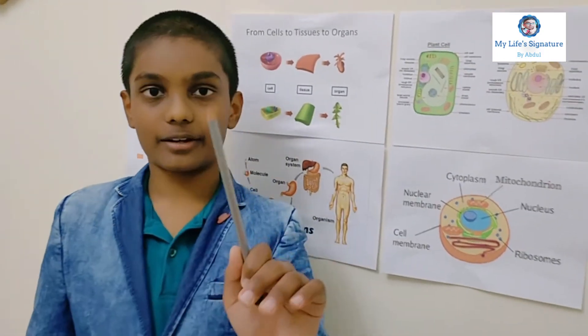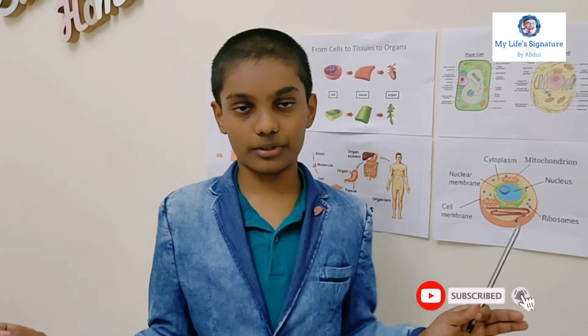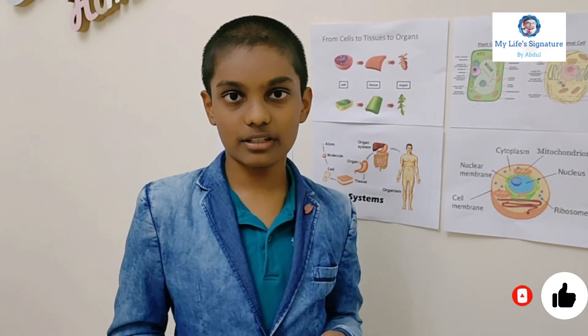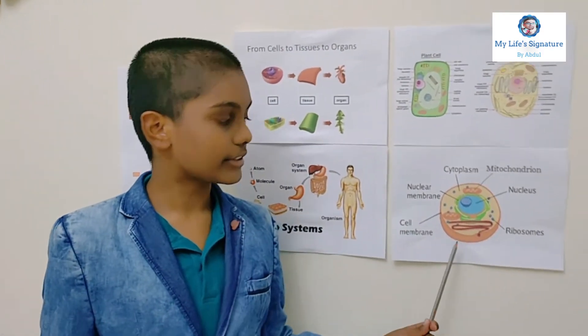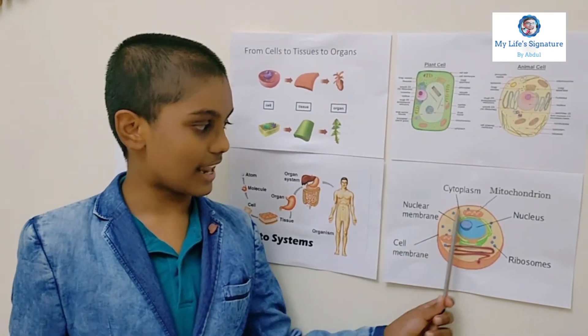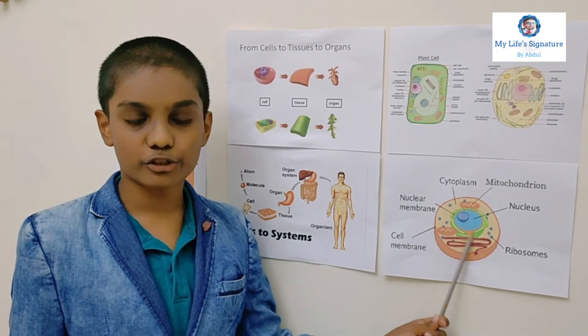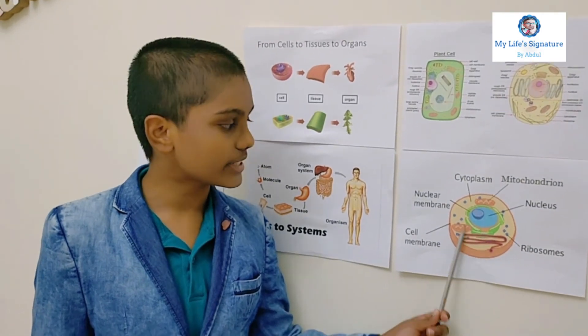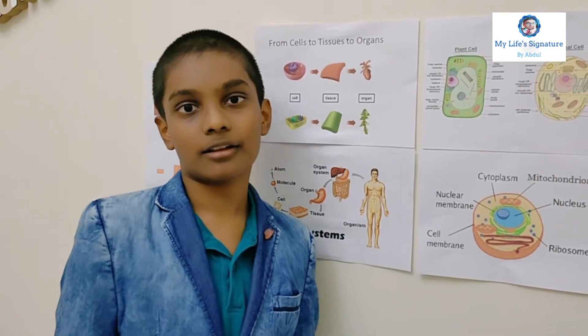Now you can see the structure of the cell. But wait — by now you're wondering who discovered the cells. Well, the British scientist Robert Hooke was the one who discovered cells when he was looking at them through a microscope. Now you're seeing the cell and wondering what is the structure and what is inside the cell — well, that's the topic for the next video.